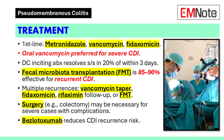Treatment: First-line antibiotic treatments for Clostridium difficile infection include metronidazole, vancomycin, and fidaxomycin. For severe infection, oral vancomycin is often preferred. Discontinuation of the inciting antibiotic may lead to symptom resolution in about 20% of those infected within 3 days. Fecal microbiota transplantation is highly effective, with success rates of 85 to 90% for recurrent infection when antibiotics have failed.